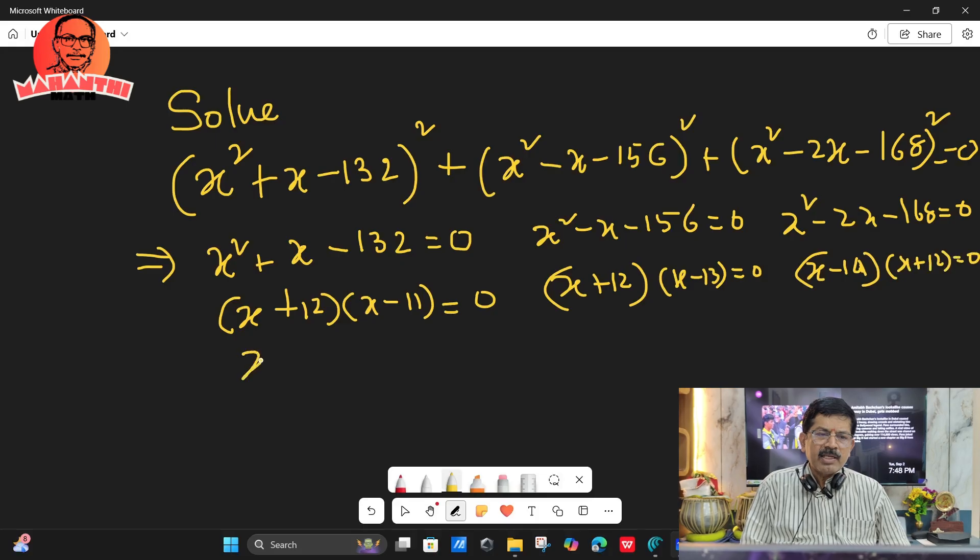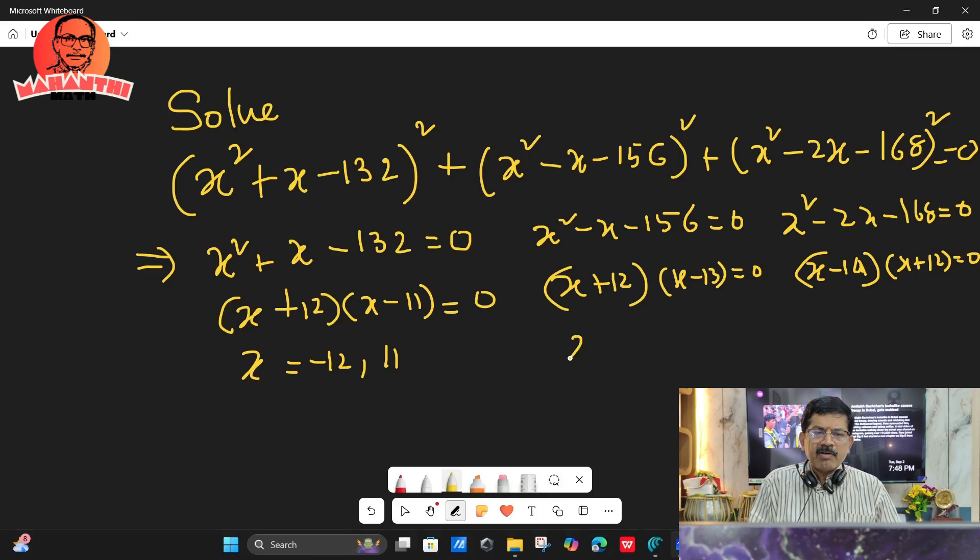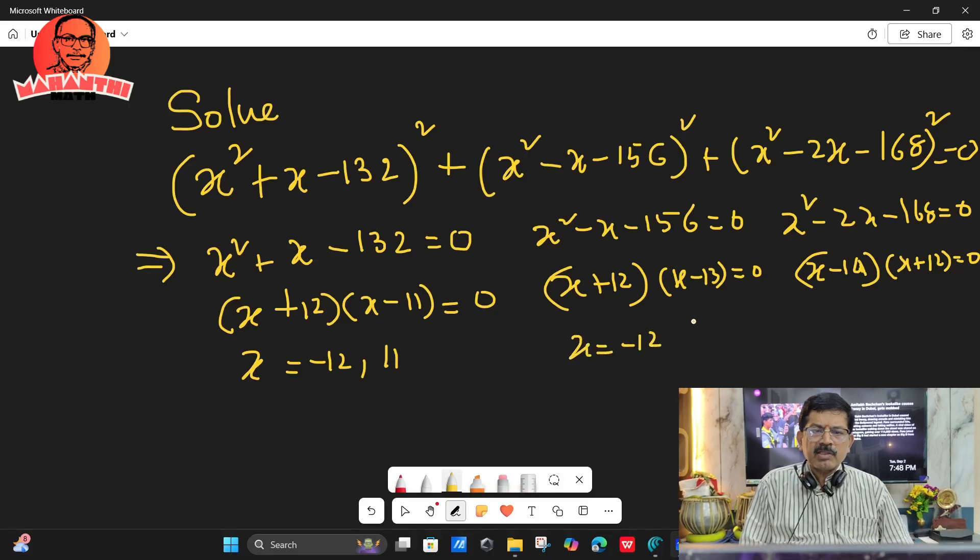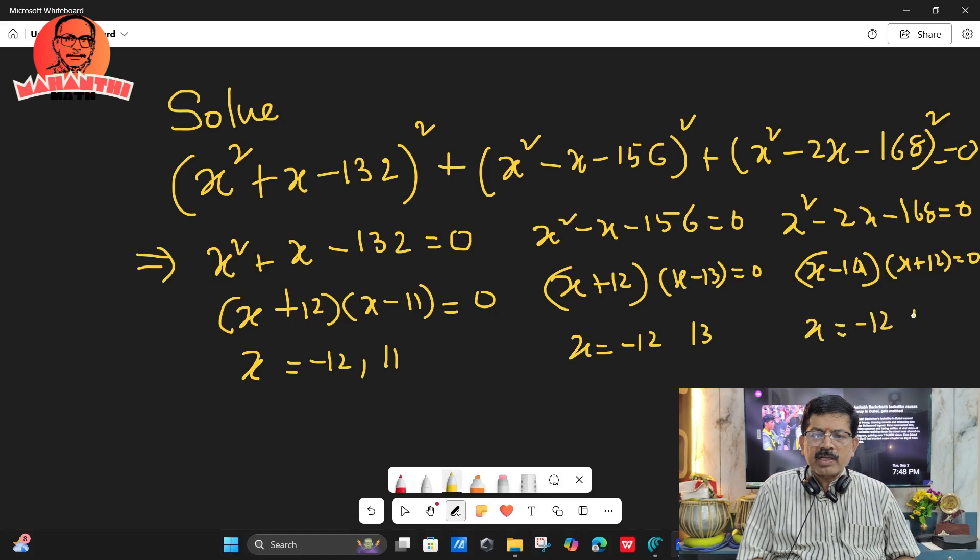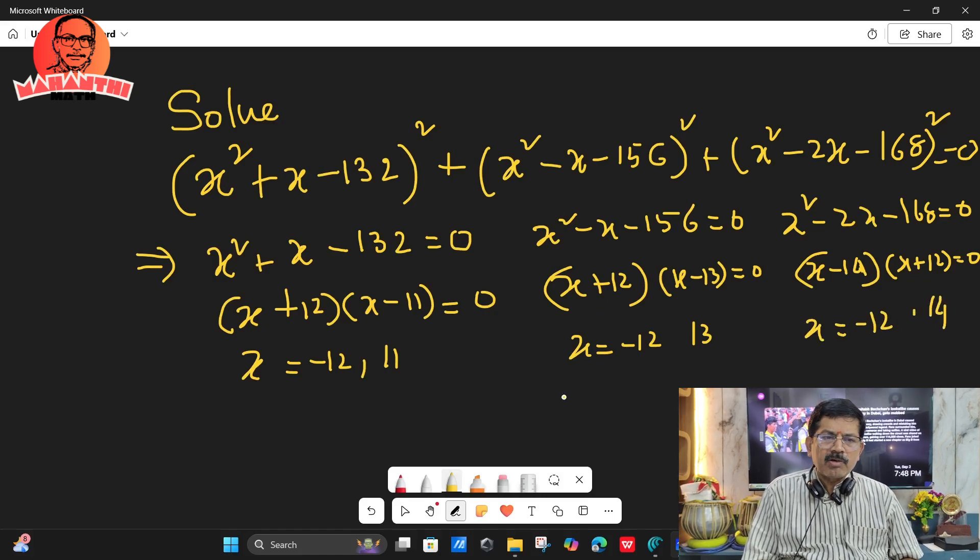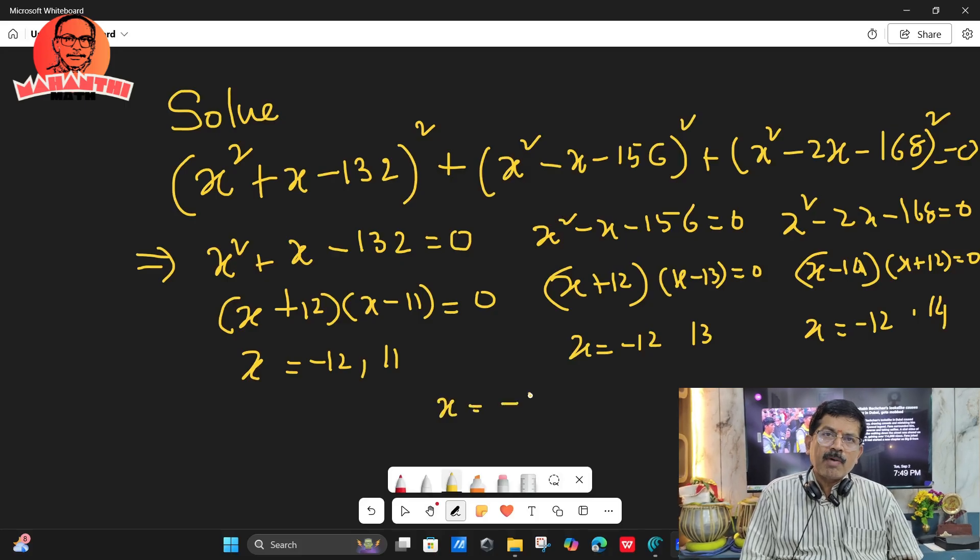If you solve these equations individually: x = -12, 11. Second one, x = -12, 13. Third one, x = -12, 14. But all should be zero. That's why your answer will be x = -12.